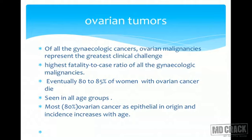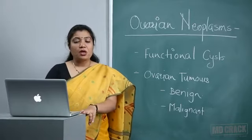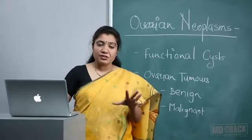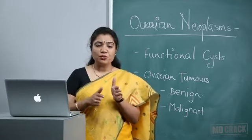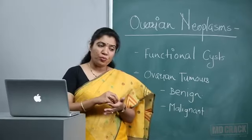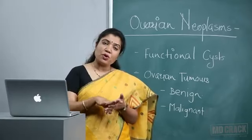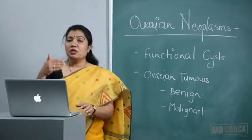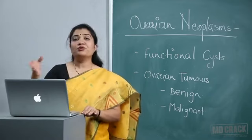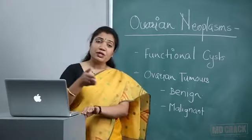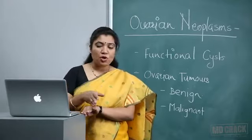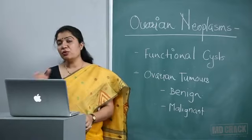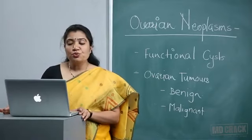Almost 80% of ovarian cancers are epithelial in origin, and incidence increases with age. The etiology: whenever the ovary is under stress — every month from puberty to menopause, ovaries undergo ovulation, healing, ovulation, healing — that triggers malignancy. History of infertility and ovulation induction are risk factors that lead to ovarian cancer.